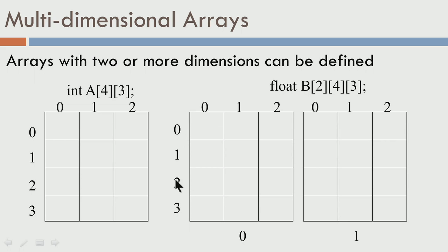You can access the ith row of the 0th plane by accessing b[0][i], and if you want the ith row and jth column of that plane, you say b[0][i][j]. To access something in the 1st plane, you use b[1][i][j] and so on. You can actually have dimensions more than three, but for most practical purposes you will need 1D, 2D, and 3D arrays.